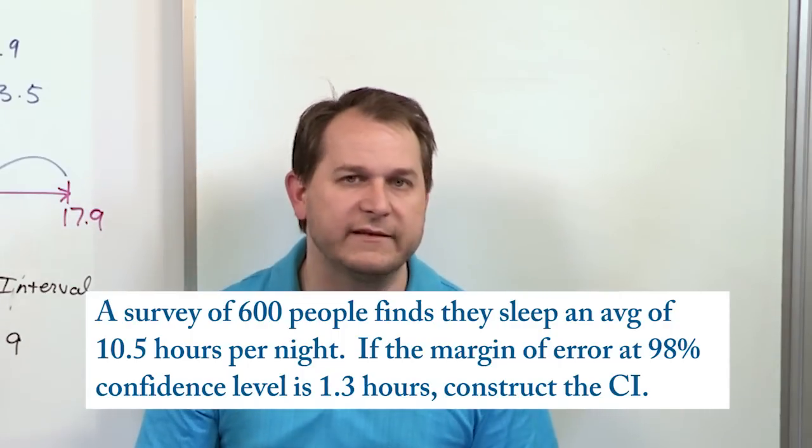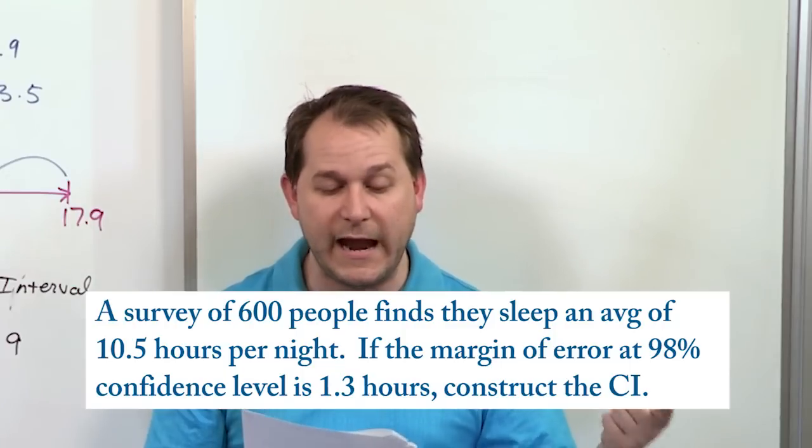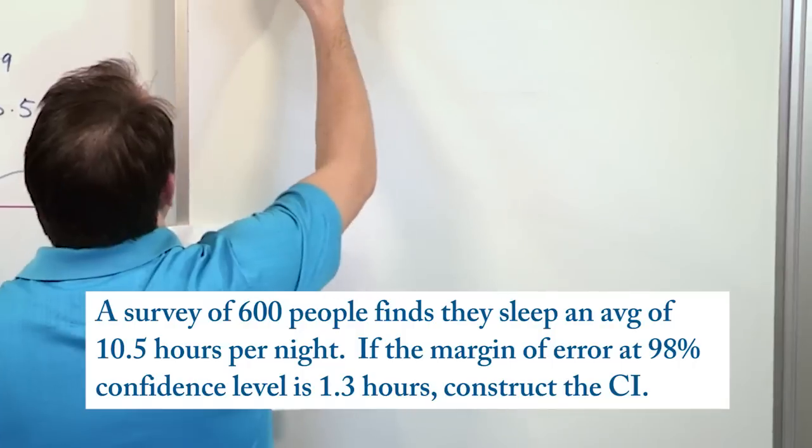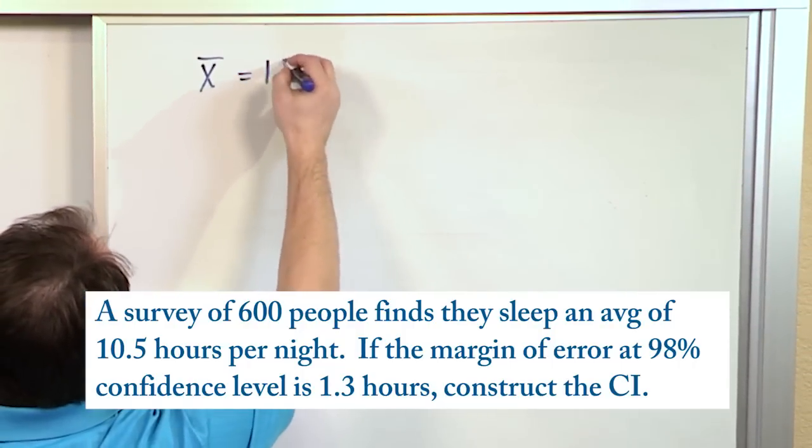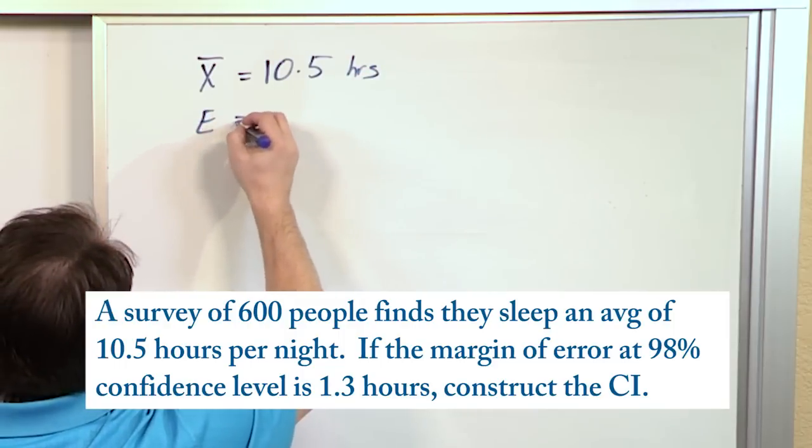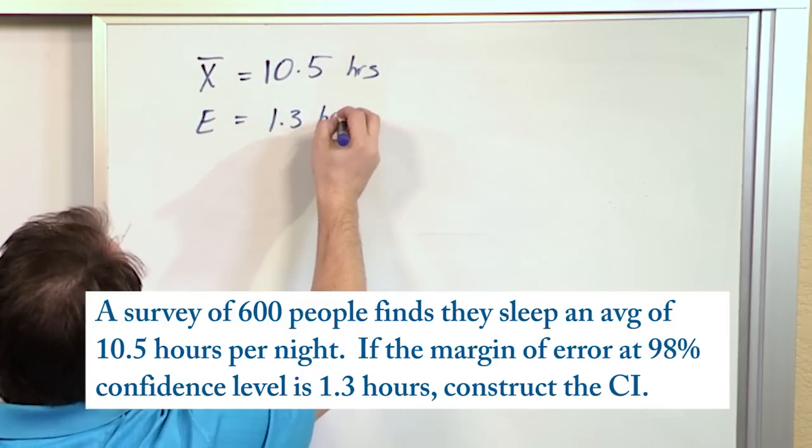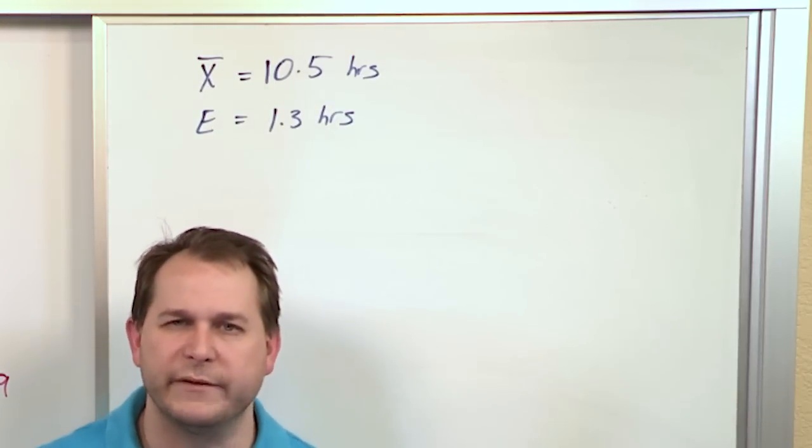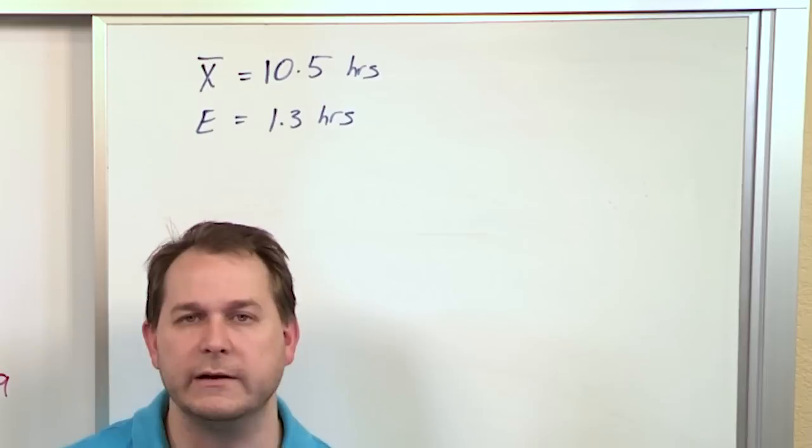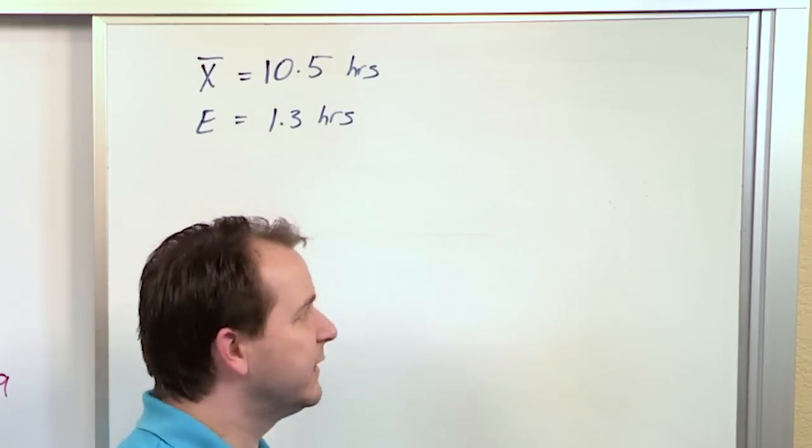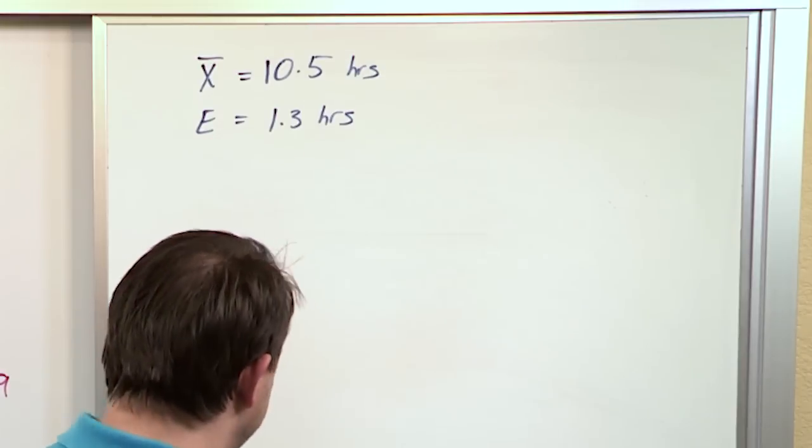We're given the level of confidence, 98%, and the margin of error, 1.3 hours. So really, it's the same sort of thing. The sample mean is 10.5 hours. The margin of error is 1.3 hours. In this particular problem, it doesn't really matter the confidence level or the number of people we surveyed. That's just extra information. In future problems, you will use that information. But here, you've given the margin of error.